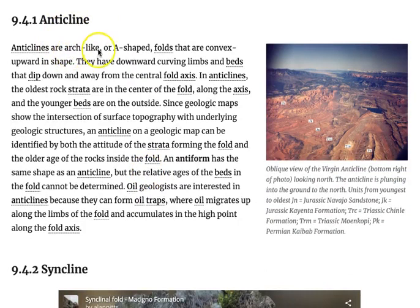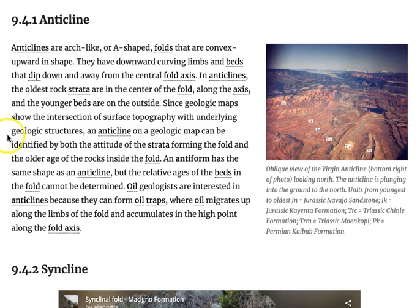Anticlines are arch-like or A-shaped folds that are convex upward in shape. They have downward curving limbs and beds that dip down and away from the central fold axis. In anticlines, the oldest strata are in the center of the fold along the axis and the younger beds are on the outside. Since geologic maps show the intersection of surface topography with underlying geologic structures, an anticline on a geologic map can be identified by both the attitude of the strata forming the fold and the older age of rocks inside the fold.